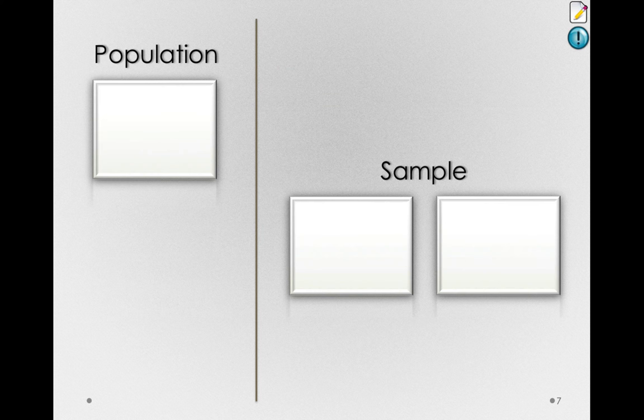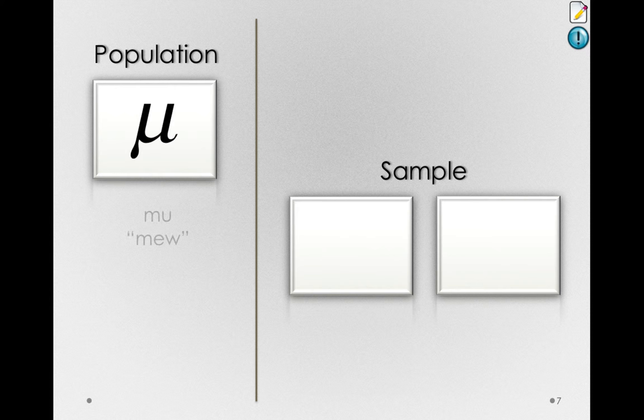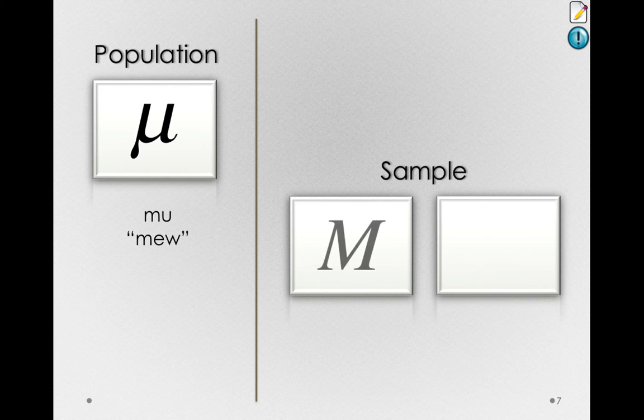Now the mean takes on different symbols depending on what type of data we're working with. If we're working with population data, then taking the sum of scores divided by the number of scores in the set, we'll actually return a value called mu. Mu is the Greek letter for the population parameter. On the other hand, if we're working with sample data, and we take the sum of the scores divided by the number of scores we have, what we'll obtain is either M or x-bar, depending on the notation you wish to adopt.